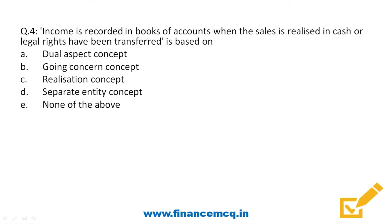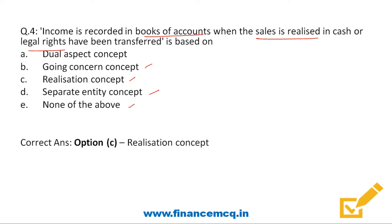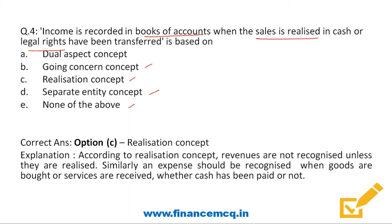Next question: income is recorded in the books of accounts when sales is realized in cash or legal rights have been transferred — this is based on option A: dual aspect concept, option B: going concern concept, option C: realization concept, option D: separate entity concept. The correct answer is option C: realization concept. According to the realization concept, revenues are not recognized unless they are realized. That is why when a company receives an advance from a customer, it does not show it as sales revenue immediately — it is booked as an advance until the sale is completed.